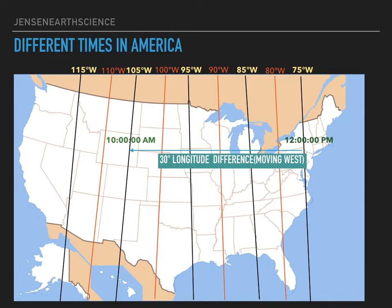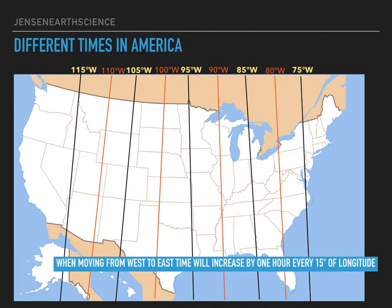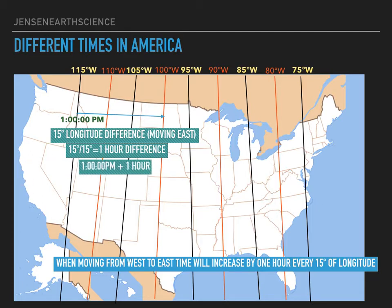Since we're moving east to west, the time will be earlier in the day than where we started from, so we subtract hours. 12pm minus 2 hours will be 10am. When moving from west to east, time will increase by one hour every 15 degrees of longitude. If it is 1pm at 115 degrees west, it will be 2pm at 100 degrees west. This is a 15 degree difference, meaning a 1 hour difference — 15 divided by 15 is 1. Since we are moving from west to east, we add 1 hour, so at 100 degrees west it will be 2pm.